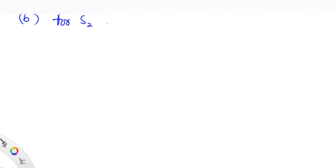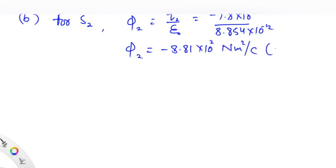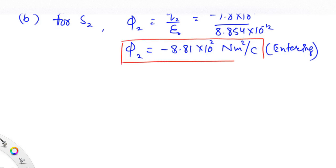For the second part, for surface s2, φ2 = q2 / ε₀ = −7.8×10⁻⁹ C divided by 8.854×10⁻¹². So φ2 is calculated to be −8.81×10² N·m²/C. The negative sign shows that the flux is entering into the closed surface. This is the answer for the second part.